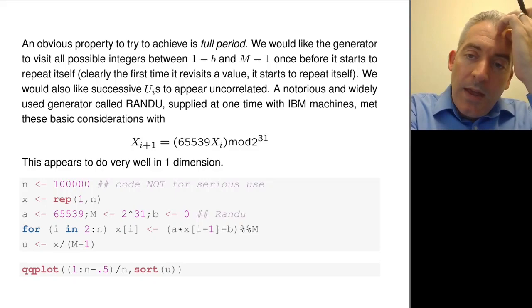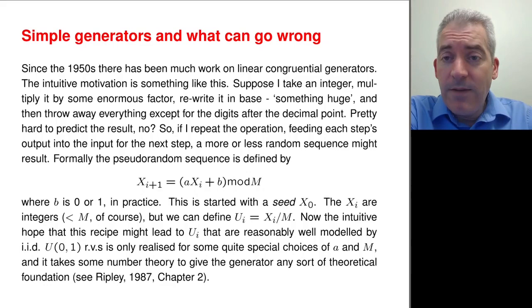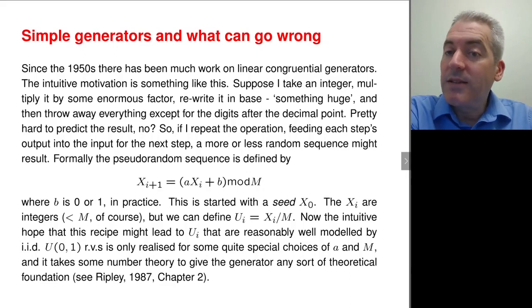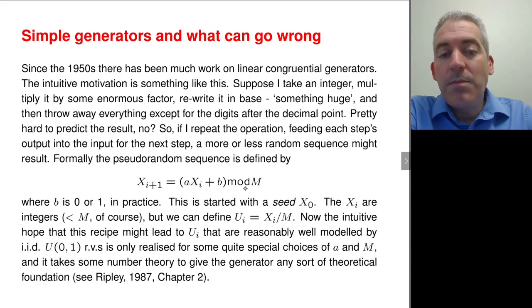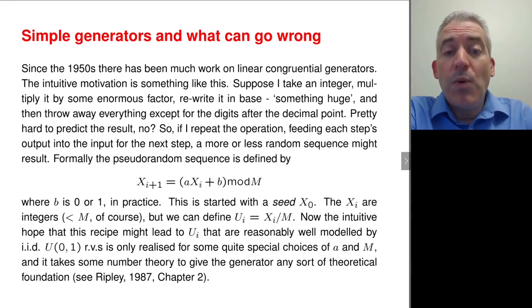The question is how do you choose a, b, and m to get a random-looking sequence. Well, one thing you might want is a full period. If you're looking at integers mod m there are only m different values you could possibly have, and because this is a deterministic sequence the best you could possibly hope for is visiting each of those m integers once and then cycling around again. So a generator of this form could only possibly have a maximum period of m. But of course it might have a period much shorter than that - it might revisit a number way before reaching m and cycle around that loop forever. Thinking about the period of your generator is obviously very important.